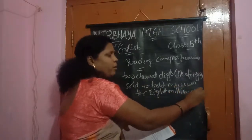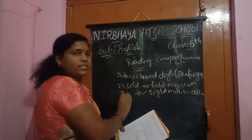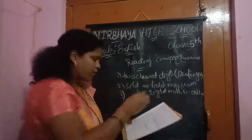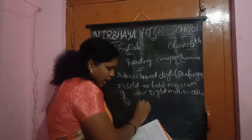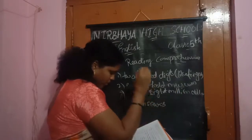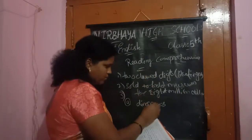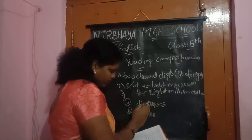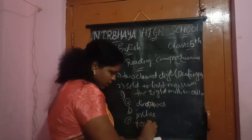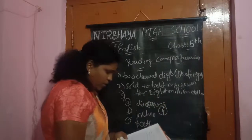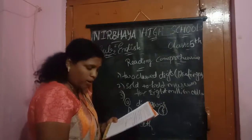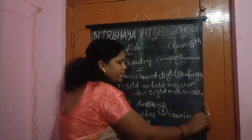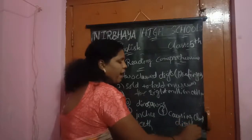Write the sentence from your book. Now, find the plural forms of the given words from the passage. Dinosaur — dinosaurs. Inch — inches. Tooth — teeth. The meaning of the word 'fatal' is causing death. You can also write 'disaster'.